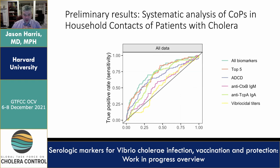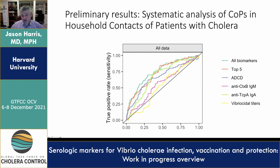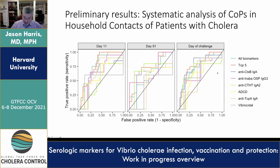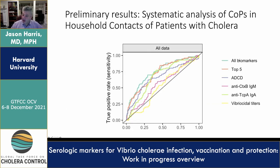We have also looked at these markers to predict protection in people exposed to toxigenic Vibrio cholerae. Looking at functional and antibody markers as correlates of protection in household contacts of patients with cholera in Dhaka, Bangladesh — incorporating all our biomarkers, all the multiplex bead assays, vibriocidal, and other functional assays like phagocytosis and complement deposition — even when you combine all these antibodies into a model, you can predict somewhat who will be infected, but the area under the curve is not great. This may be because not all household contacts are equally exposed to cholera.